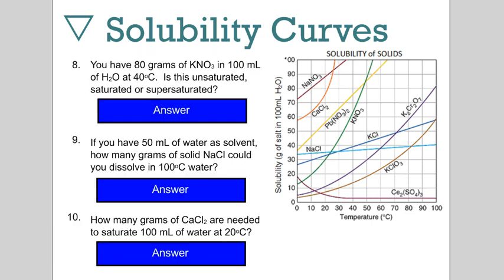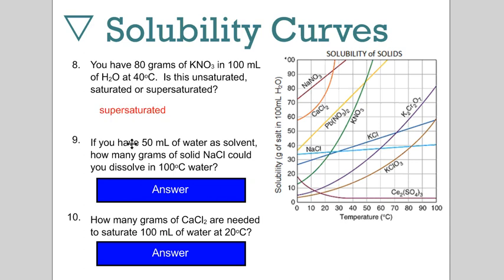Number eight: you have 80 grams of potassium nitrate in 100 mils of water at 40 Celsius. Is this unsaturated, saturated, or supersaturated? This is a scenario where the solution is already created. You know the temperature. Potassium nitrate at 40 Celsius is the green line, so roughly 65 grams should dissolve to saturate. If you have 80 grams, you would be above your line. That would be supersaturated.